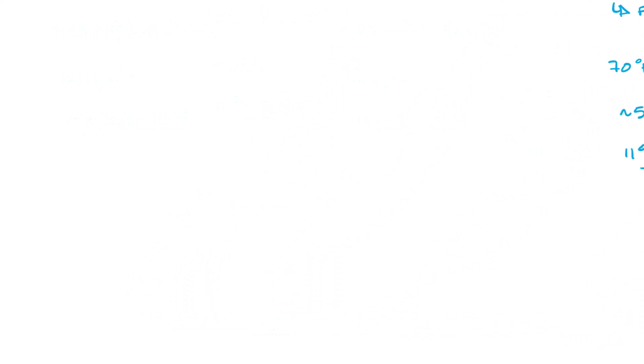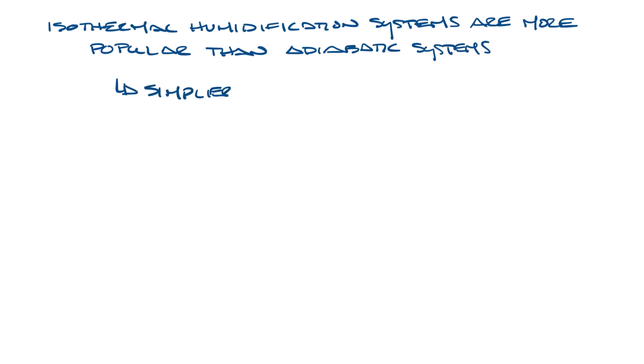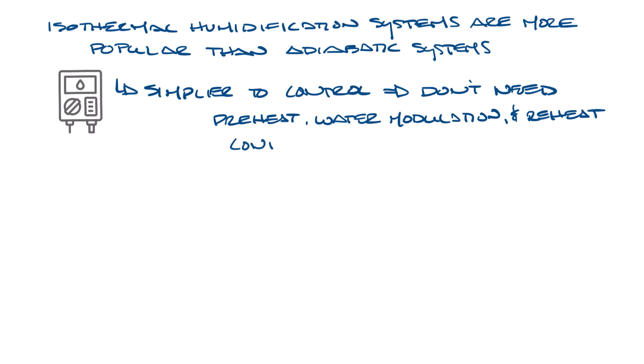So let's move this over again. Isothermal humidification systems are more popular than adiabatic systems for a couple reasons. They are simpler to control. An isothermal system doesn't need the air preheat, water modulation, or reheat controls that an adiabatic system typically requires.